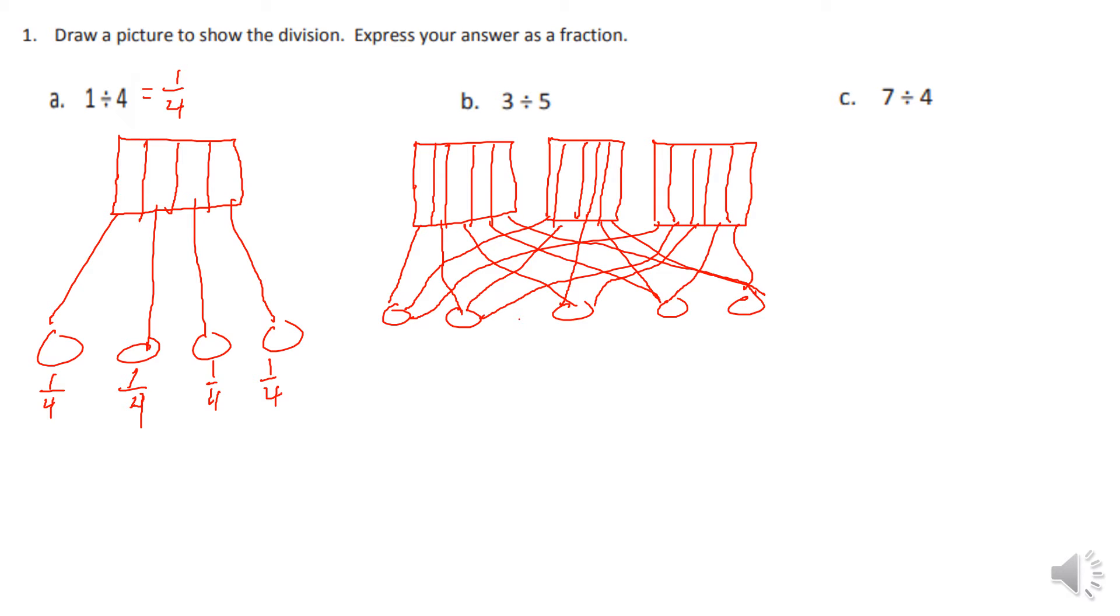So you can see each one of these people that got three out of five pieces. So we know three divided by five would equal three fifths.